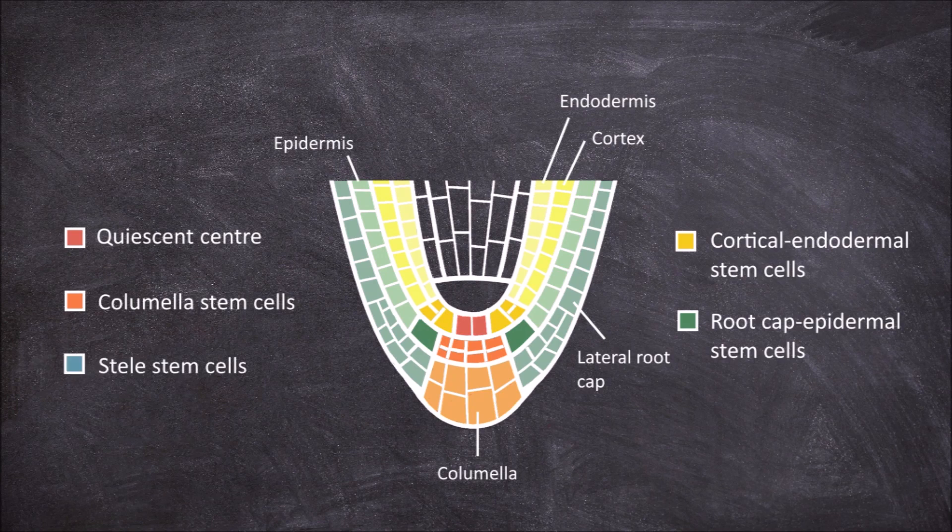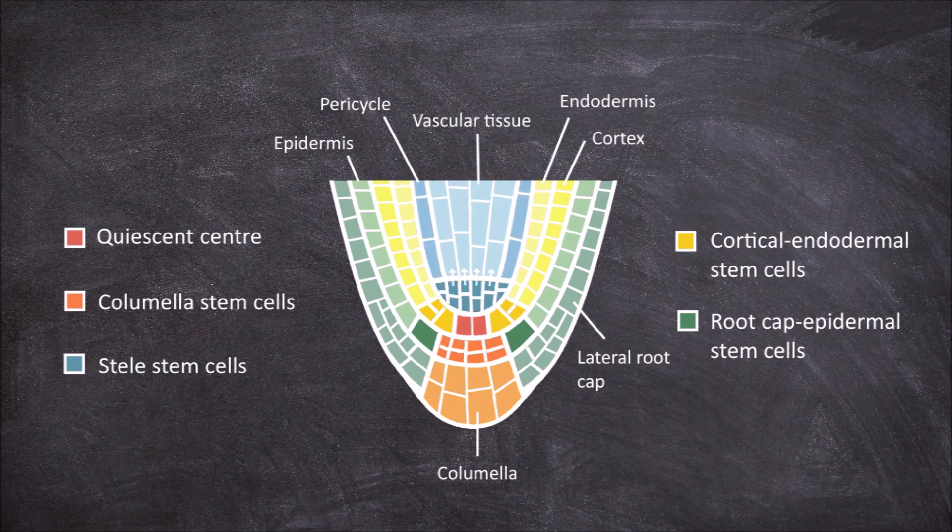These stem cells are found behind the quiescent center cells. These stem cells divide to form the pericycle and vascular tissues of the root.